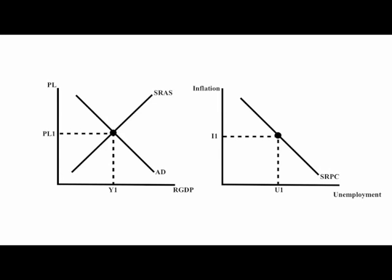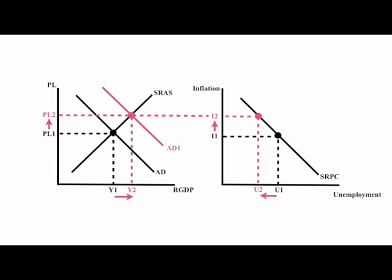In this lesson, we're going to take a look at the Phillips Curve. When we have expansionary fiscal and/or expansionary monetary policies, the aggregate demand curve will shift to the right, increasing price levels and real GDP. This increases inflation and decreases unemployment.